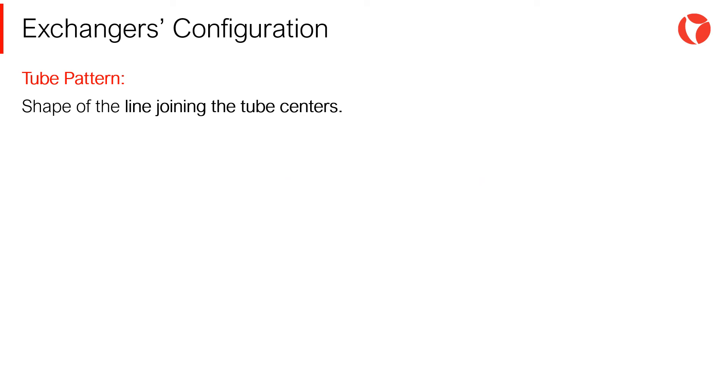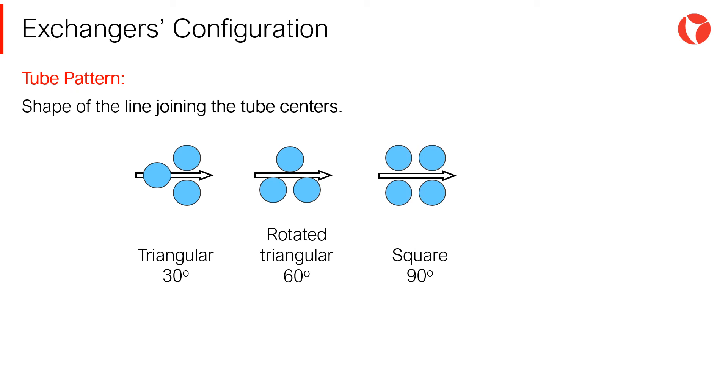The tube pattern is the shape presented by the line connected to the centers of the tubes, in a tube sheet cross section. Among other things, the tube pattern depends on the type of fluid in the shell and the velocity of this fluid. Both TEMA code and HEI standard establish that the permitted tube patterns are triangular 30 degrees, rotated triangular 60 degrees, square 90 degrees, and rotated square 45 degrees.